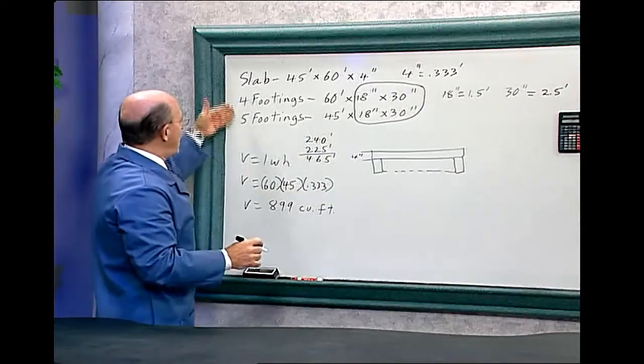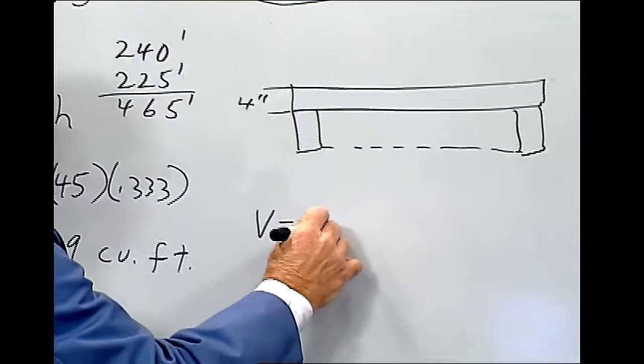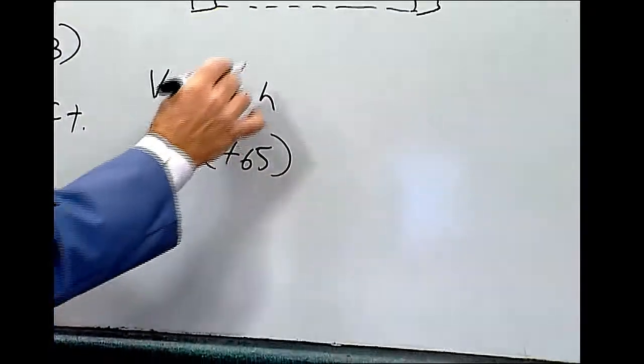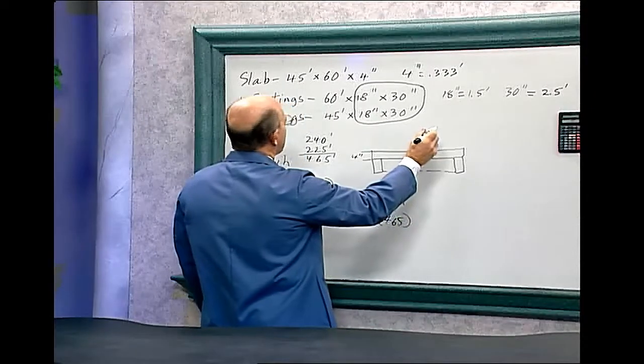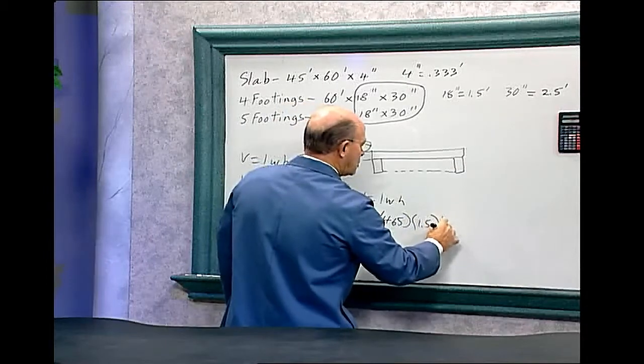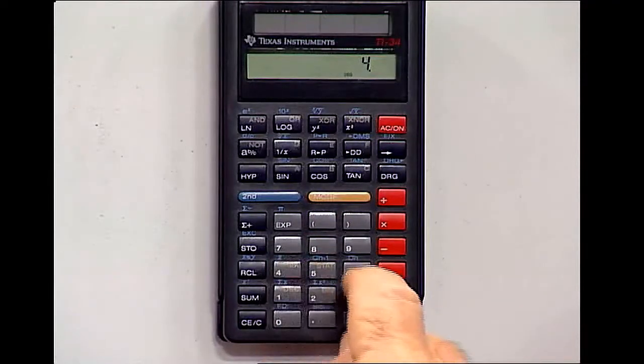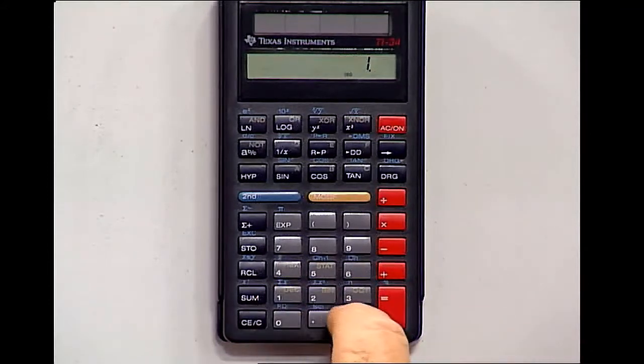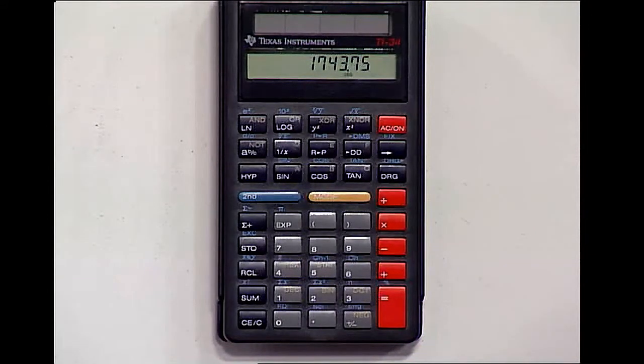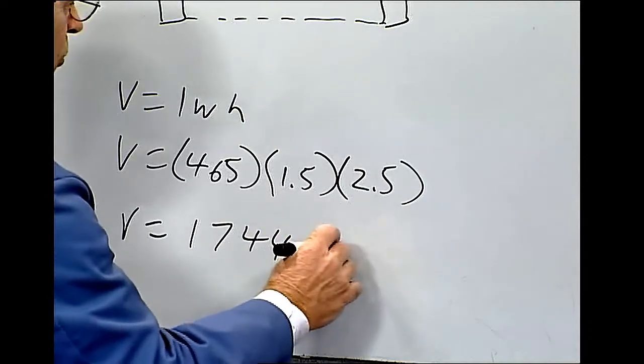Now let's find the volume for all the nine footings that are in this slab. So volume equals length times width times the height. Volume equals the length is 465 times the width, which is 1.5 times the height, which is 2.5. Let's plug in the numbers here. 465 times 1.5 times 2.5 equals 1744. So volume equals 1744 cubic feet.